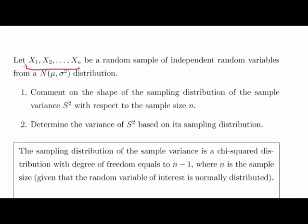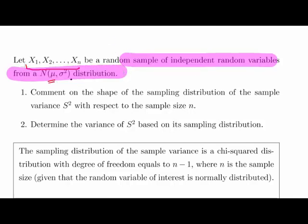Let X1, X2, X3 all the way up to Xn be a random sample of independent random variables from a normal distribution. The normal distribution has parameters population mean mu and population standard deviation, sorry, population variance in this case, sigma squared.